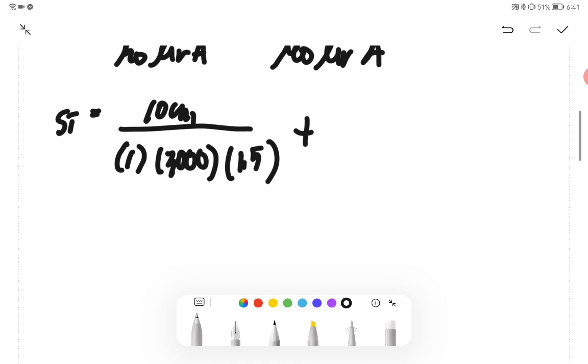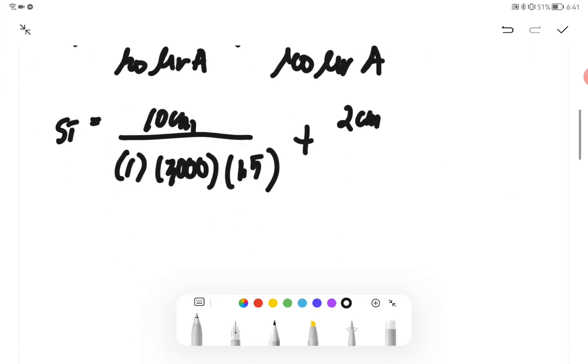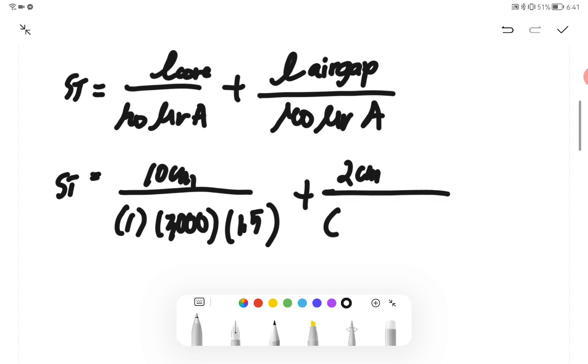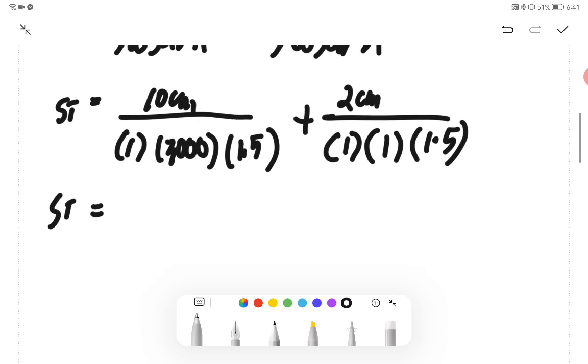Plus 2 centimeter, all over μ₀ of this one is just 1 and μr is 1. The area is 1.5. So computing it with calculator, we will arrive... let's try to solve: 10 over 1 by 3,000 by 1.5 plus 2 over 1. We have 1.336. What's the SI unit for this one? The SI unit for this one is Gb per A·max.